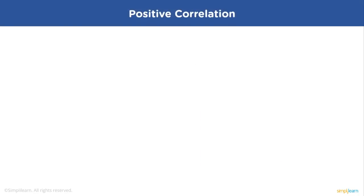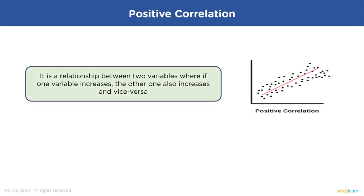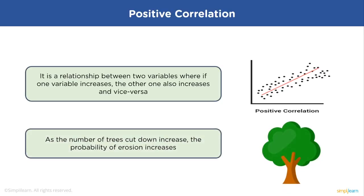There are mainly two types of correlation. The first one is positive correlation. A positive correlation means that the linear relationship is positive, and the two variables increase or decrease in the same direction. The number of trees cut down and the probability of erosion are in correlation. When one increases, the other also increases and vice versa.